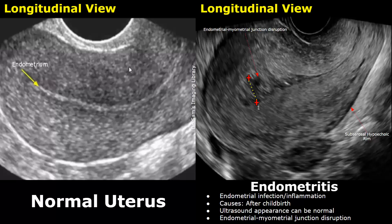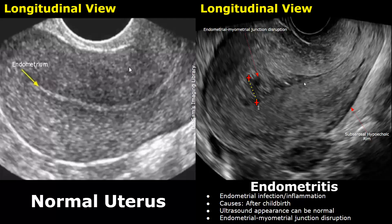The first case is endometritis. The most common cause of endometritis is after childbirth. These are transvaginal images showing the uterus. The image on the left is of a normal uterus in longitudinal plane — the endometrium is smooth and hyperechoic. The image on the right is of endometritis. Ultrasound appearance of the uterus can also be normal in endometritis. One of its features is disruption of the endometrial-myometrial junction; we cannot clearly see the junction between the endometrium and myometrium. The endometrium is not clearly seen — it is heterogeneous in appearance and appears thickened.